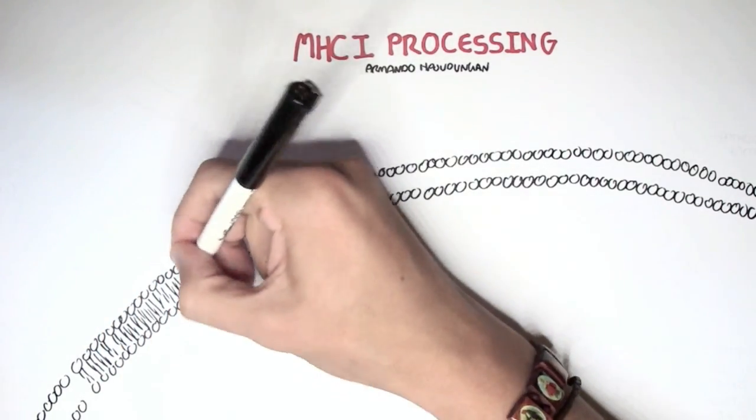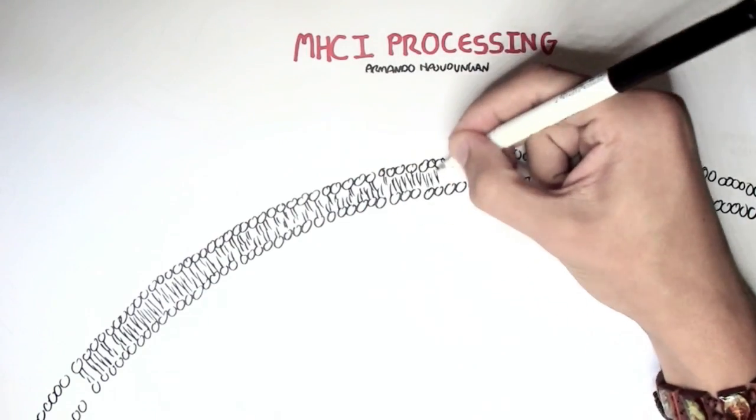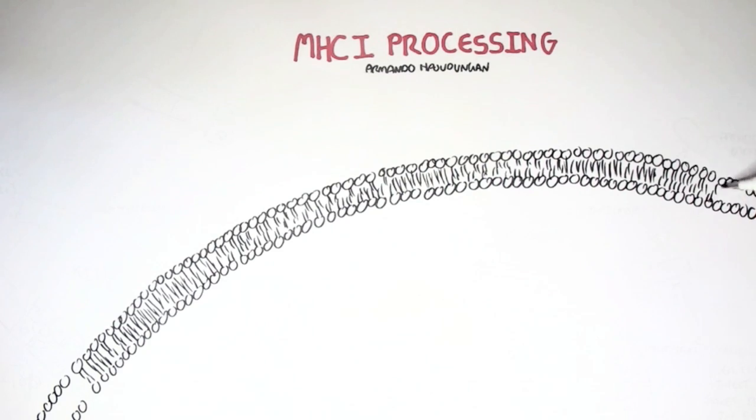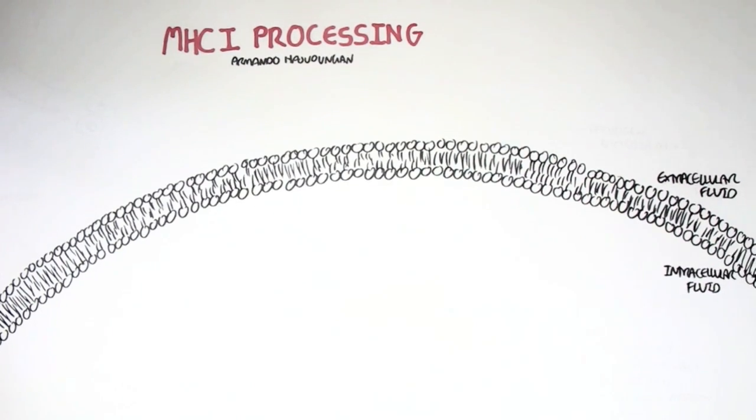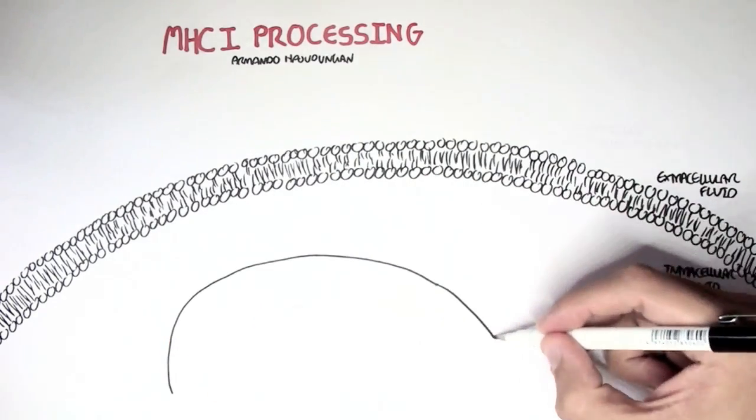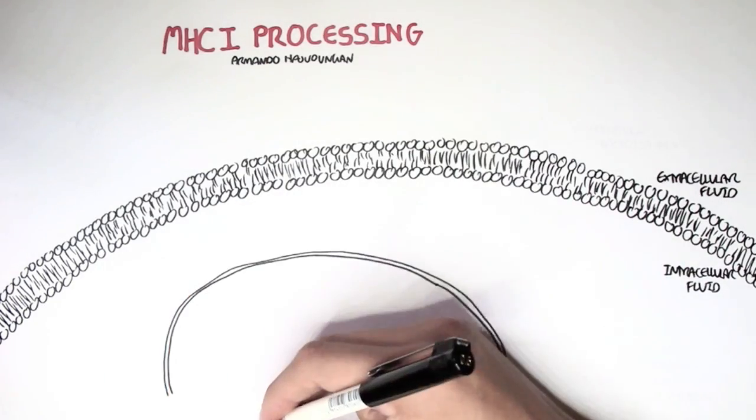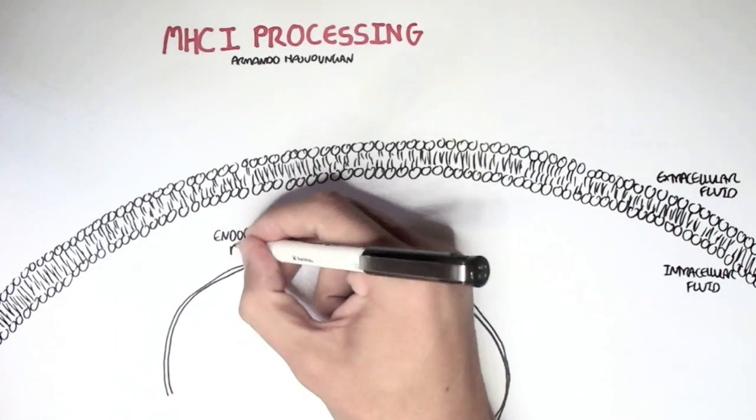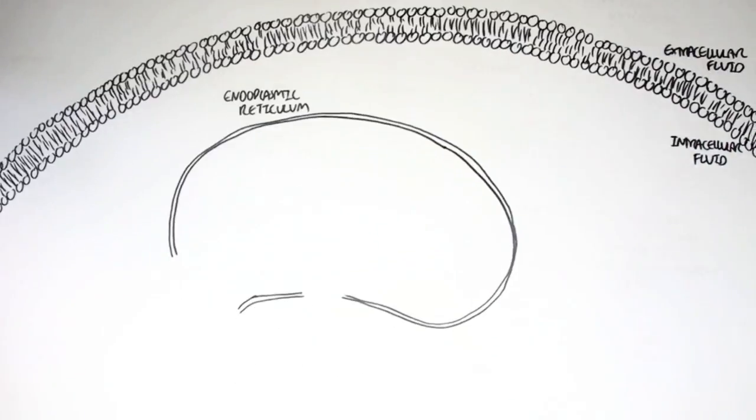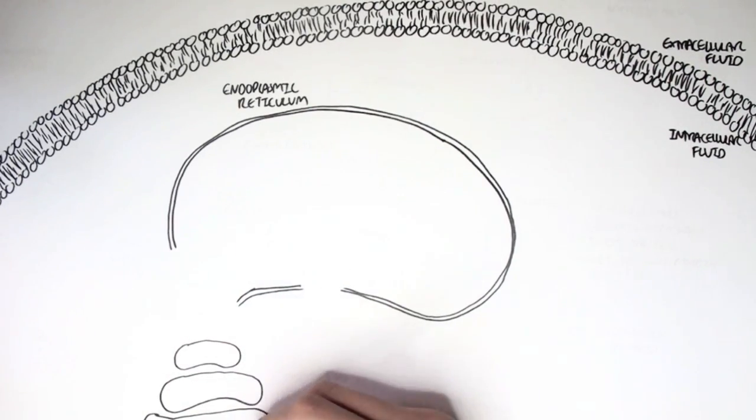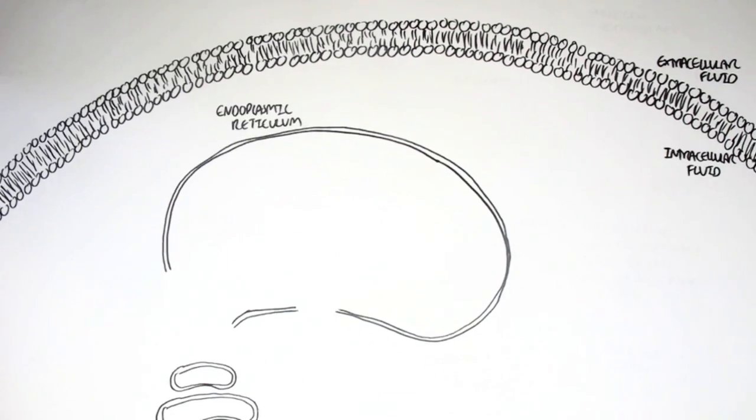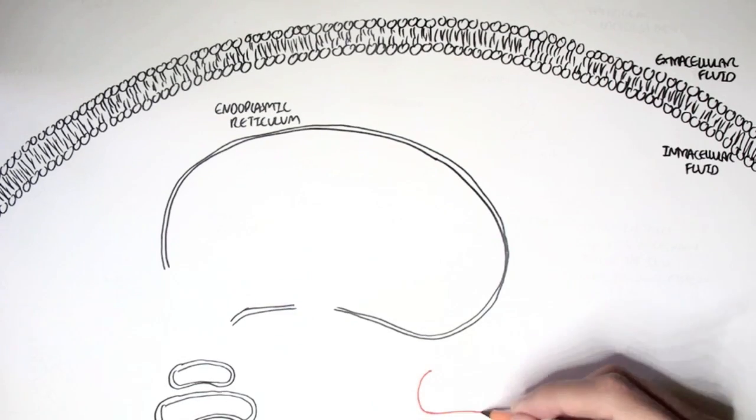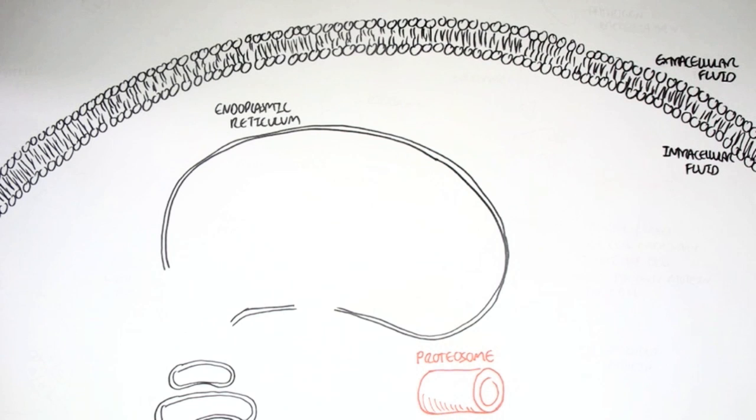So we begin here by drawing the cell. It can be any nucleated cell. Here we have the extracellular fluid and here we have the intracellular fluid. Some important components within the cell that we have to know is that we have an endoplasmic reticulum, specifically the rough endoplasmic reticulum. The rough endoplasmic reticulum is close to the nucleus, which I have not drawn. We also have the Golgi apparatus, which is important in MHC I processing. And lastly, we have an important complex known as the proteosome. The proteosome is within the cytoplasm and it has important functions.